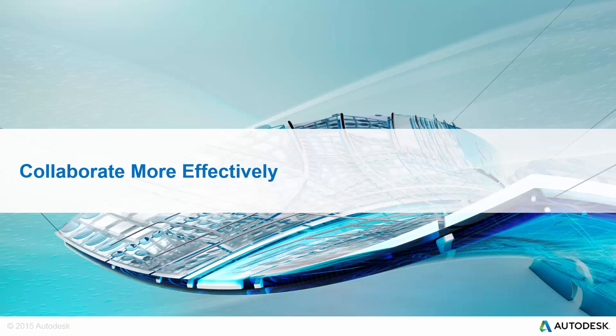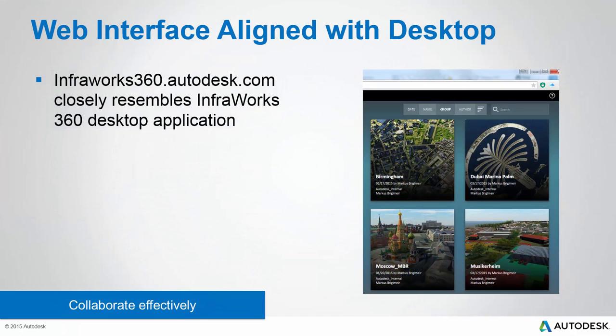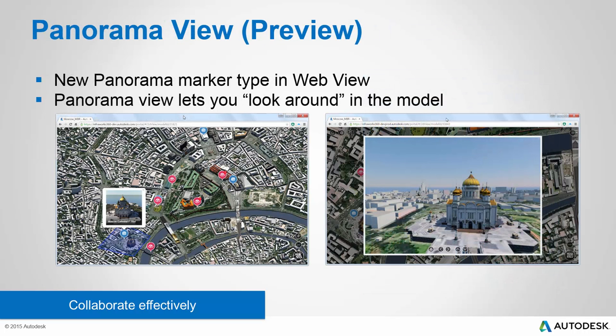Let's take a look at our final topic, which is collaborate more effectively. In this latest update to InfraWorks 360, you're going to find that the web interface at InfraWorks360.autodesk.com much more closely resembles the InfraWorks 360 home experience of the desktop application. We want you to have a more consistent experience, whether you're using the desktop application, your favorite mobile device, or the web on your desktop computer. We also have a new panorama view, which lets you look around the model. This is also a preview feature — not for production — and we'd like you to test it out and give us feedback, with no promises that it will exist in a future fully supported version.